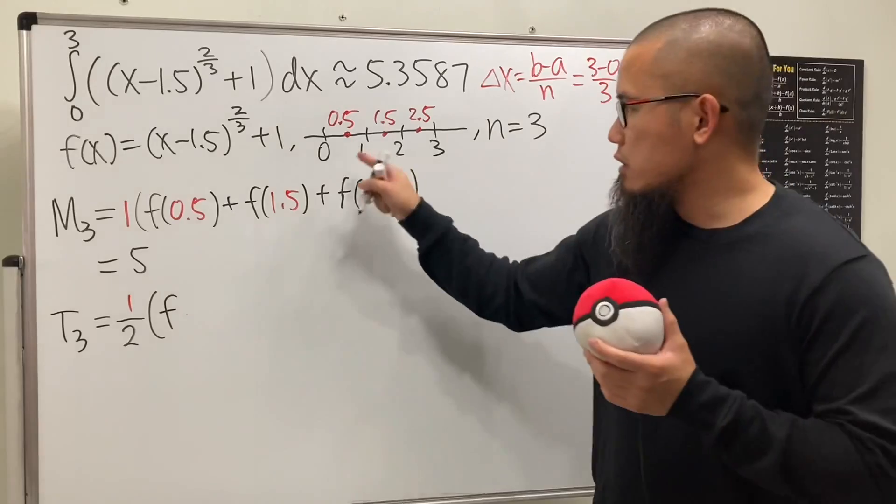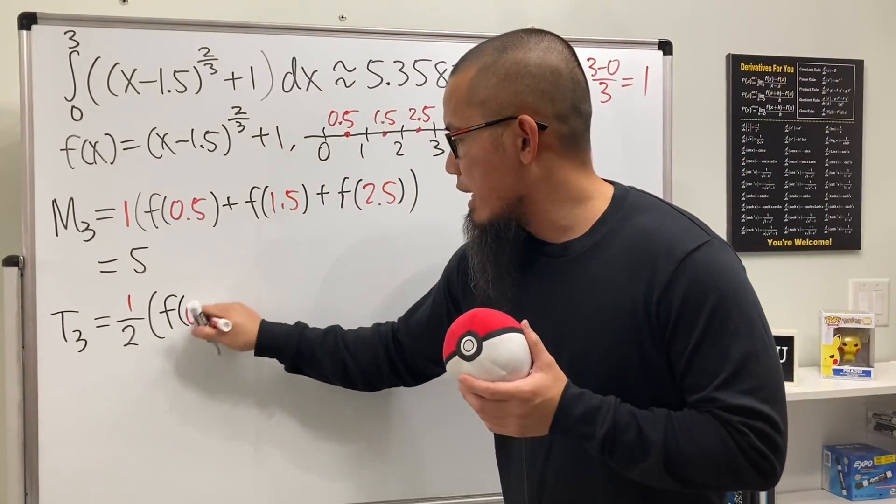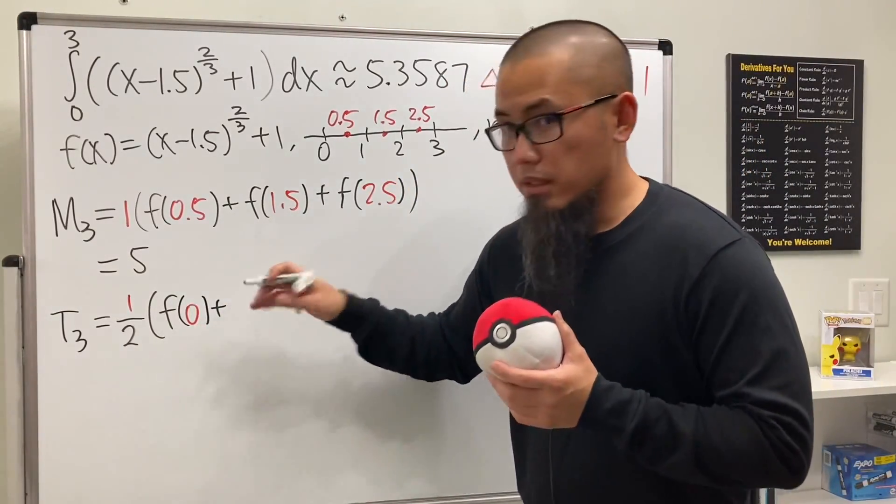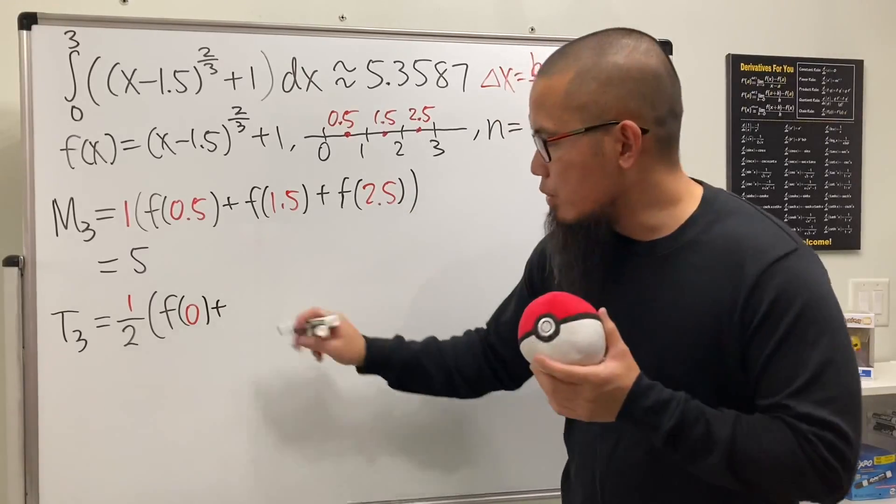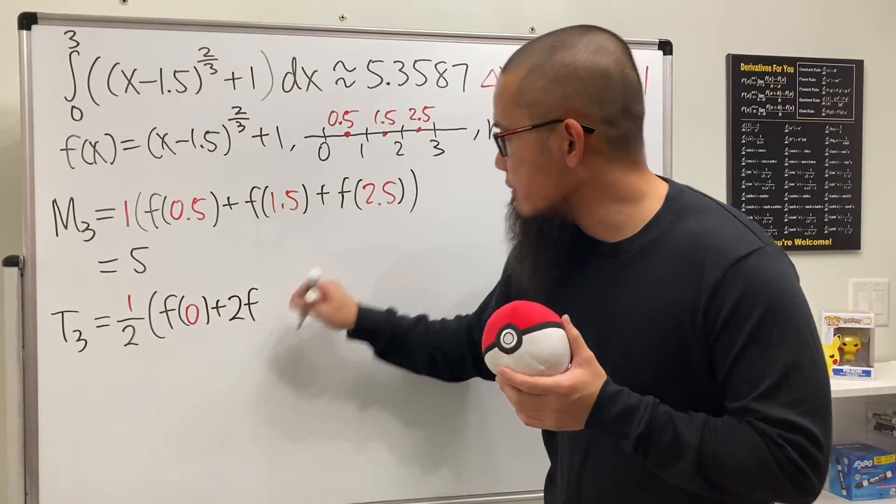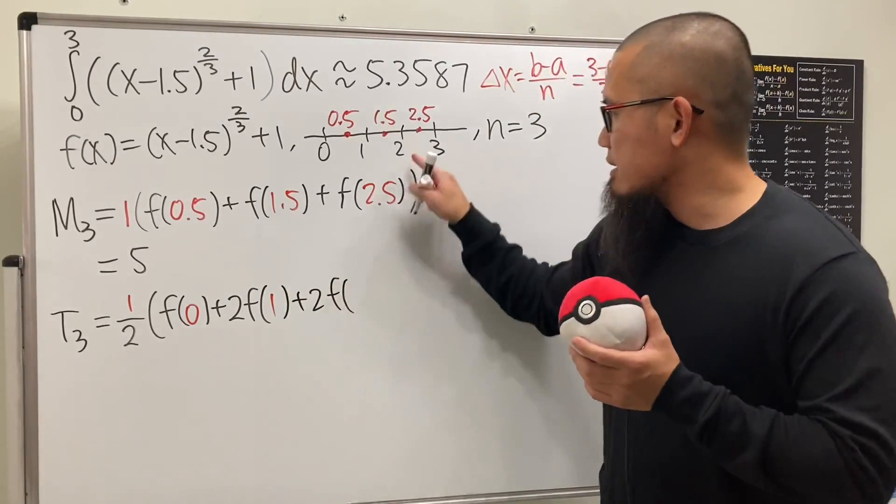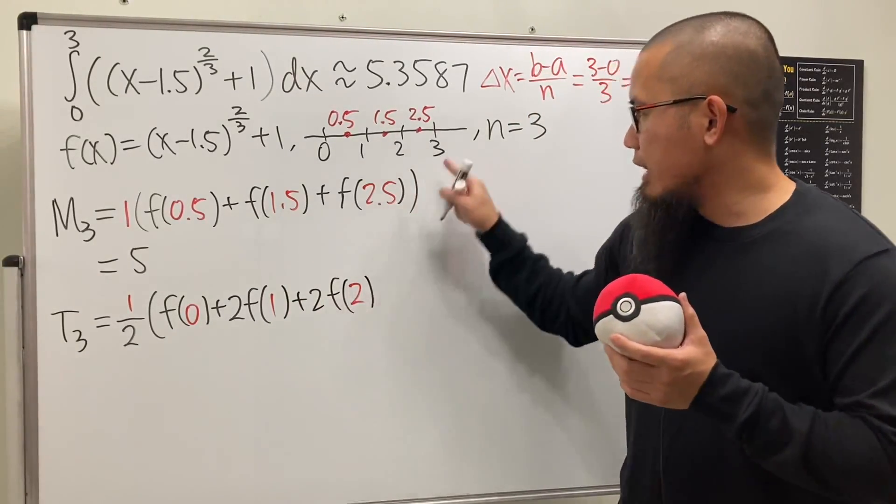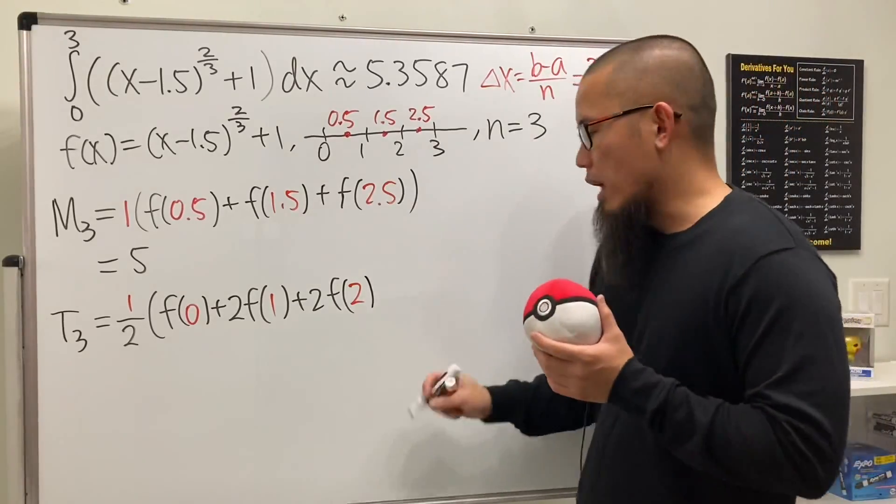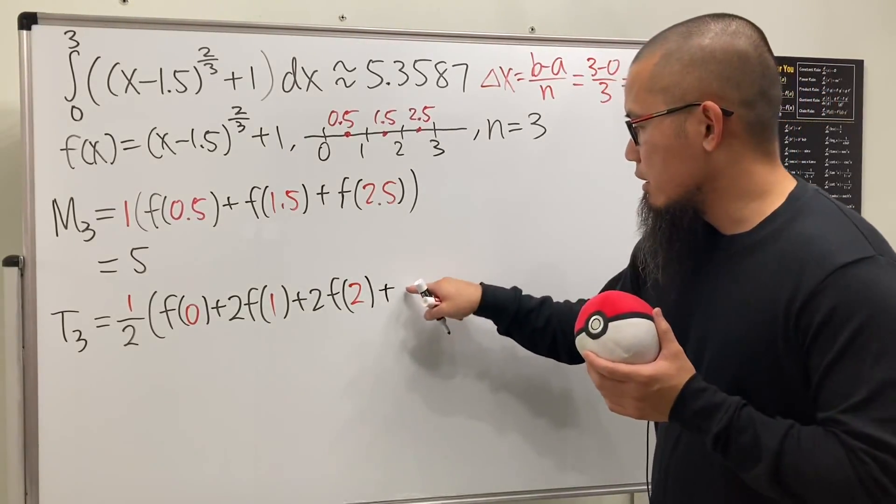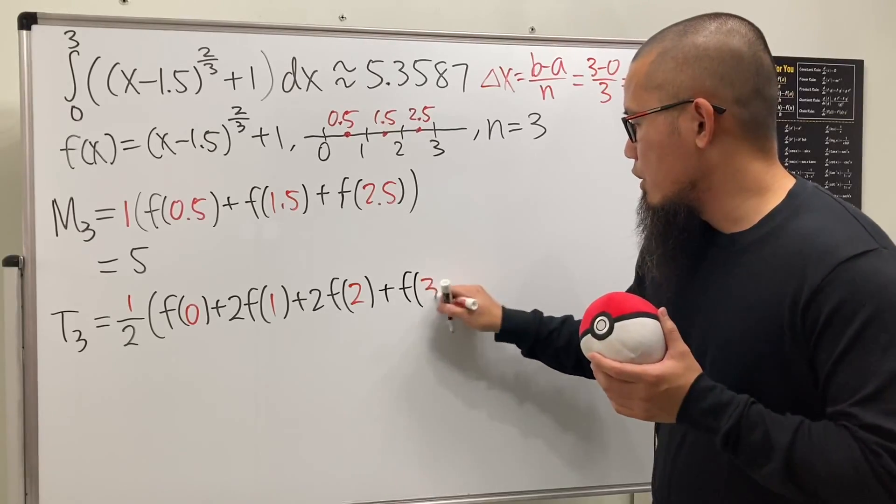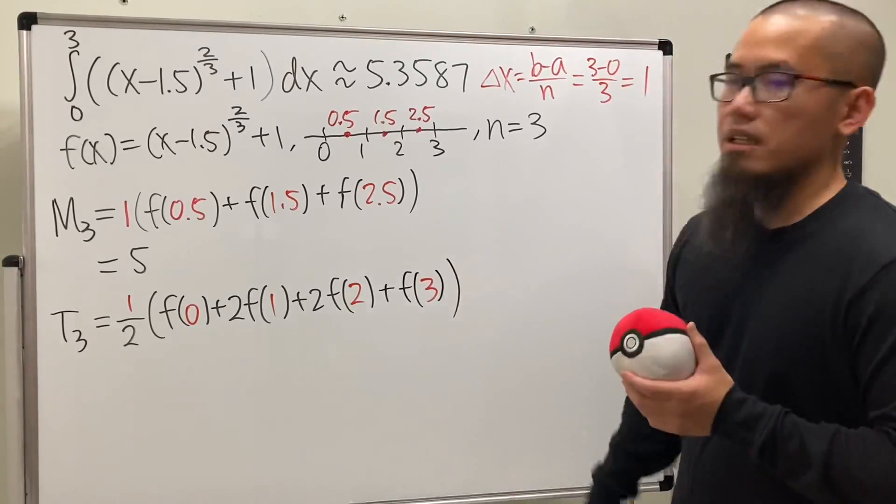The coefficient for the first term is 1, so we have f(0). The coefficient in the middle will be 2, so we have 2 times f(1), then 2 times f(2). For the last one, the coefficient is also 1, so we have f(3).